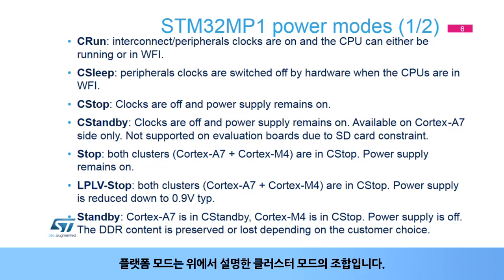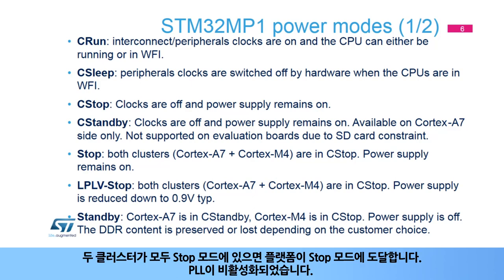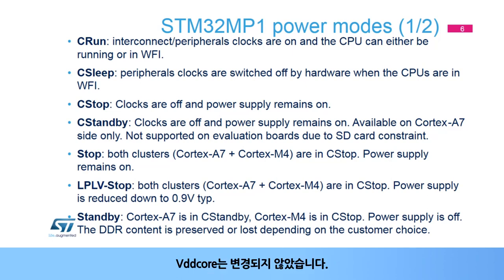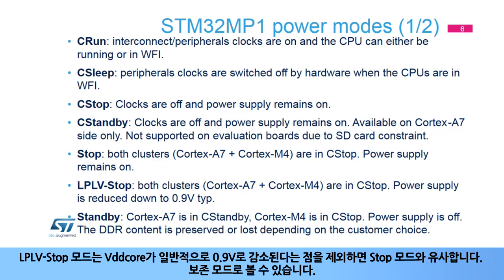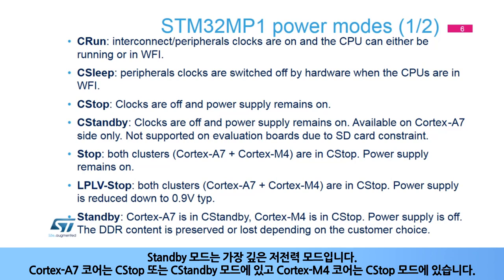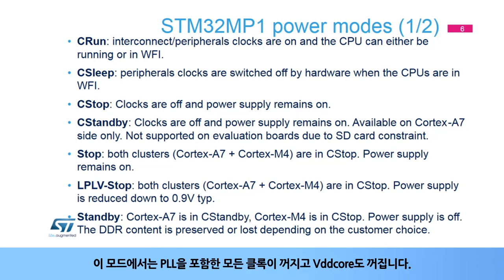The platform modes are the combination of the cluster modes described above. When both clusters are in C-Stop mode, the platform reaches Stop mode — PLLs are disabled and VDD-Core is unchanged. LPLV-Stop mode is similar to Stop mode, except that VDD-Core is reduced to 0.9V typical; it can be seen as a retention mode. Standby mode is the deepest low-power mode: the Cortex-A7 core is in C-Stop or C-Standby mode, and the Cortex-M4 core is in C-Stop mode. In this mode, all clocks including PLLs are off, and VDD-Core is also off.